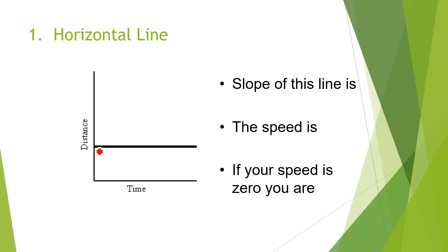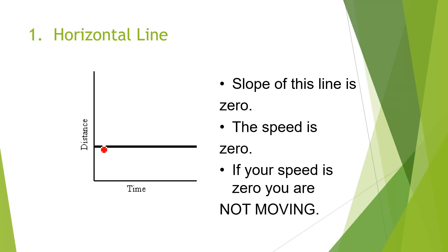In the first case, this is a horizontal line. With the passage of time, when there is no change in position — position is represented by the y-axis — the slope of this line is zero. If the slope is zero, this means the speed is also zero.